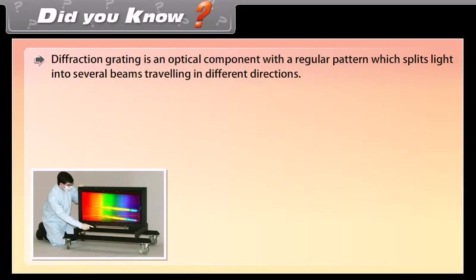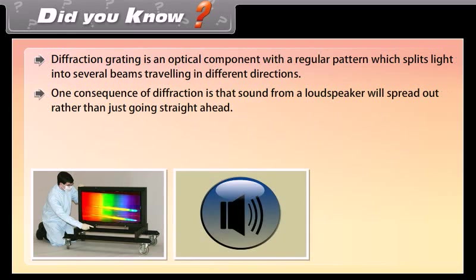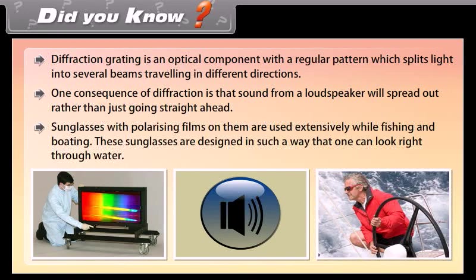Did you know? A diffraction grating is an optical component with a regular pattern which splits light into several beams traveling in different directions. One consequence of diffraction is that sound from a loudspeaker will spread out rather than just going straight ahead. Sunglasses with polarizing films are used extensively while fishing and boating, designed so one can look right through water. Reflection of waves off sea walls or other barriers can cause an interference pattern called a standing wave — in standing waves, crests do not move laterally.